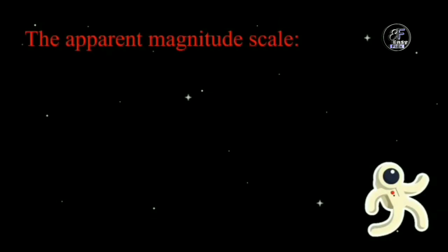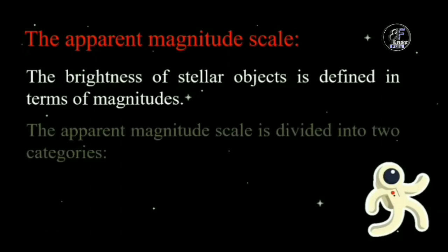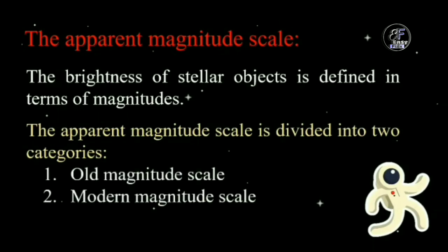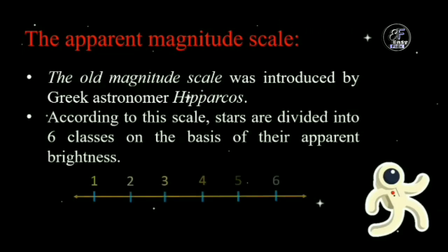Let's start with the Apparent Magnitude Scale. The brightness of stellar objects is defined in terms of magnitudes. The Apparent Magnitude Scale is divided into two categories: the Old Magnitude Scale and the Modern Magnitude Scale. In the 2nd century BC, the Greek astronomer Hipparchus introduced the Old Magnitude Scale. According to apparent brightness, he divided stars into six classes or apparent magnitudes, denoted by the symbol small m. The brighter stars are assigned the first magnitude and the fainter stars the sixth magnitude, which are visible to the naked eye.